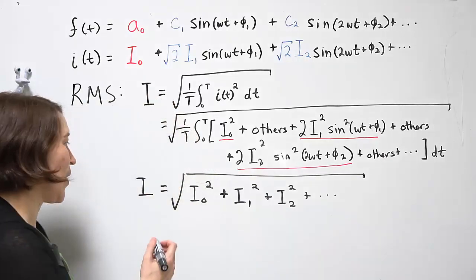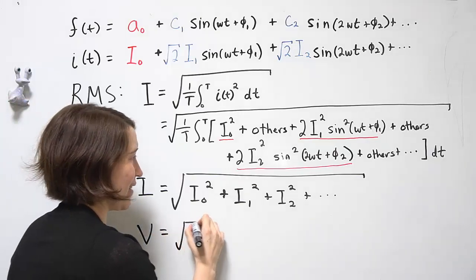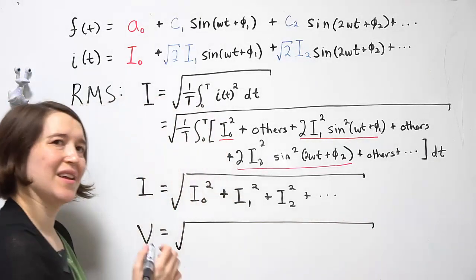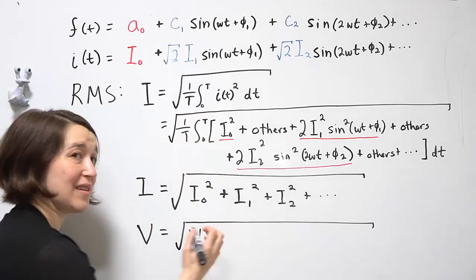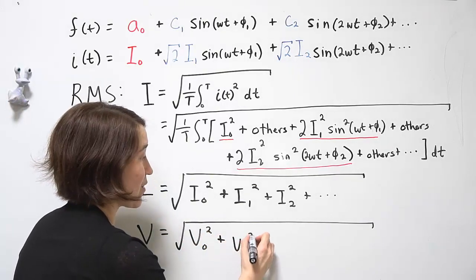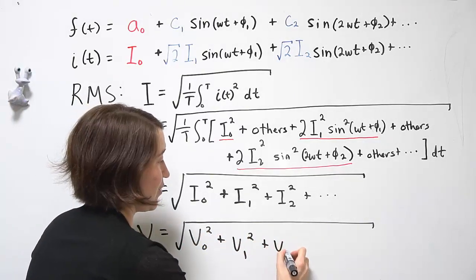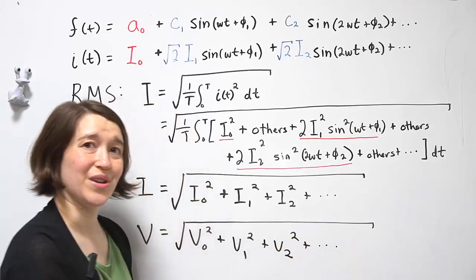For completeness, let's also write the voltage here. And it's going to be the exact same format. The fundamental value, which is the same as the DC value, squared plus V1 squared plus V2 squared and so on into infinity.